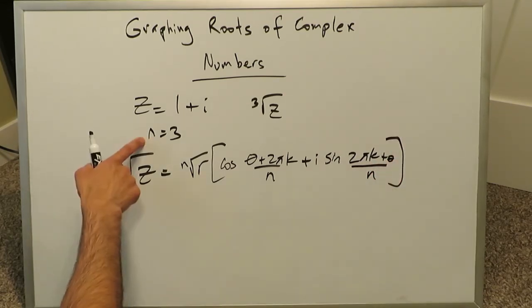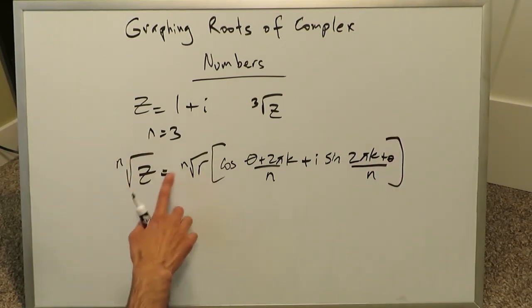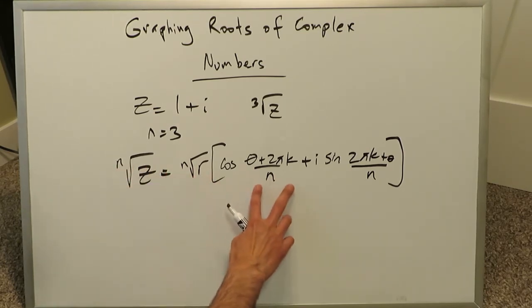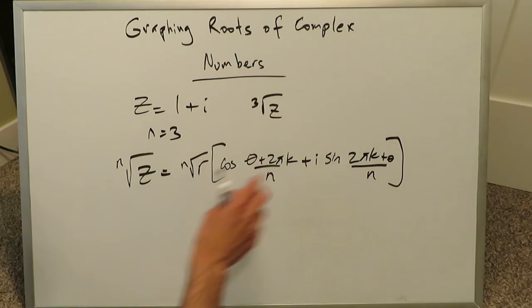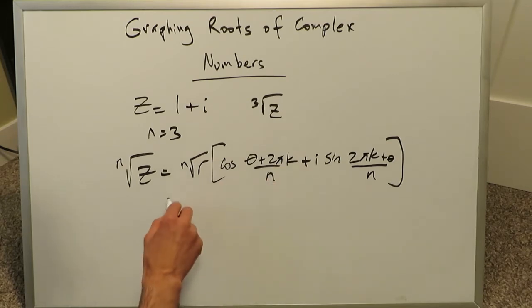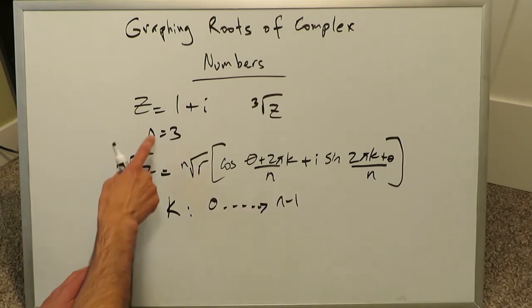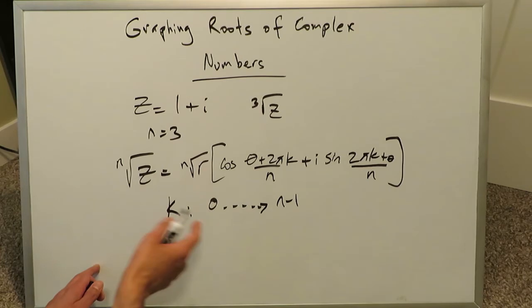You can see over here, your index of your root shows up here in the formula. The index of the root shows up in the modulus, and it shows up here in terms of being applied to the argument. You know the theta here is again the argument of your complex number. And then you see a k value over here. The k value with regards to roots is always a value which starts from 0, and it proceeds up to n minus 1.